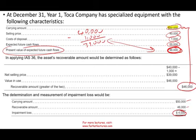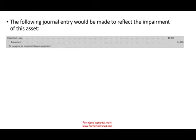IFRS is essentially a one-step test. We have a loss of $4,000: we debit Impairment Loss — an income statement account that goes to profit and loss — and credit Equipment for $4,000. That's how we impair an asset under IFRS. US GAAP has two steps; please see intermediate accounting for details.